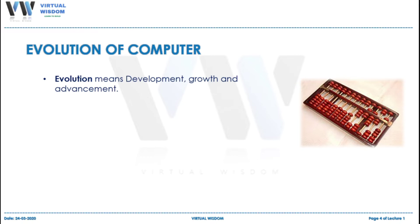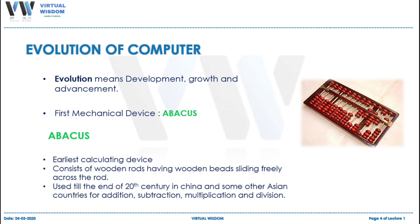At first, a computer was made on the concept of a calculating device. On this basis, the first mechanical or operational device was invented, known as Abacus. Abacus is the earliest calculating device. It consists of rods and wooden beads which can move freely along the rod. By moving these beads up and down the rod, different mathematical operations such as addition, subtraction, multiplication, and division were performed.